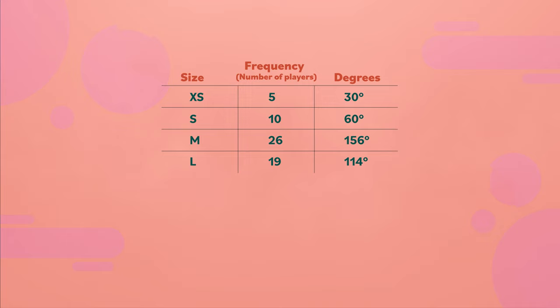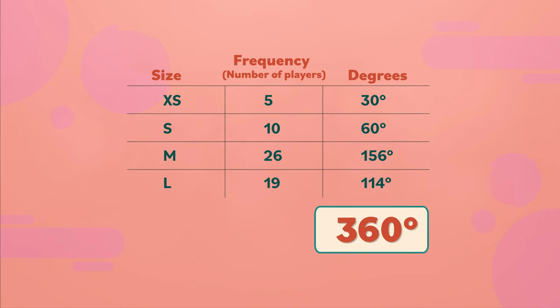To double-check her division, the coach adds up the numbers in the degrees column. This equals 360 degrees, which means that her calculations are correct.